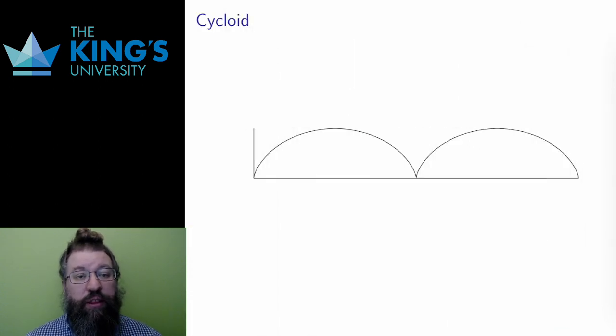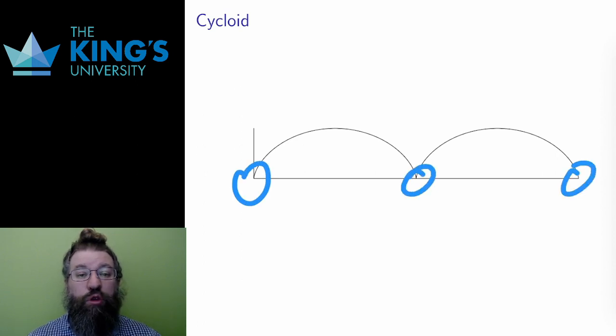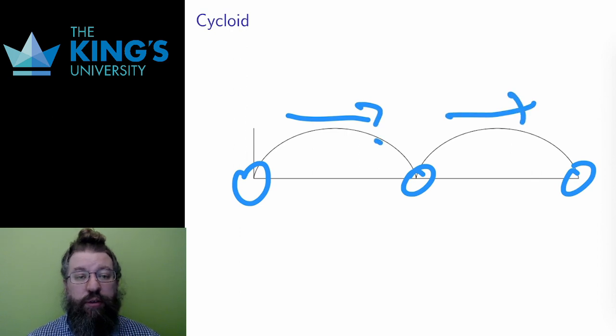On the graph, this momentarily 0 speed happens at the sharp corners. The curve moves faster at the top of the arc, and then slows down as it approaches the x-axis. When it touches the x-axis, it is momentarily stationary before the speed starts to increase again.